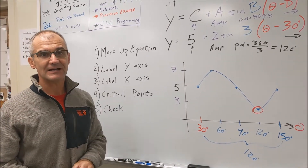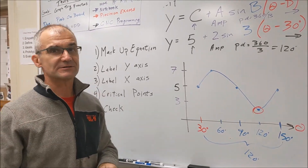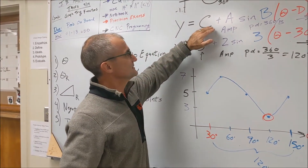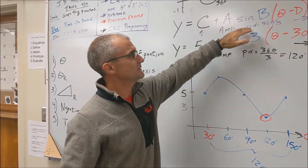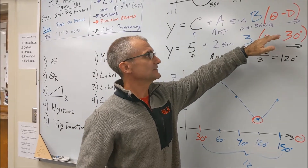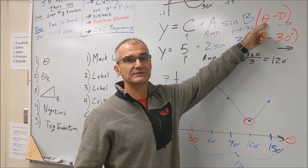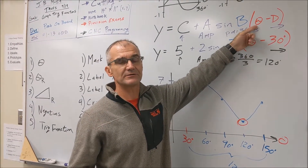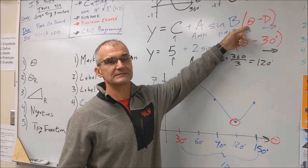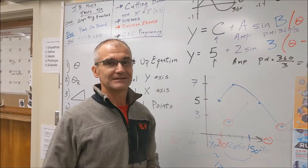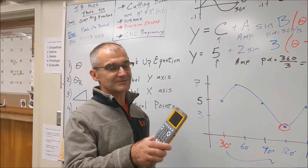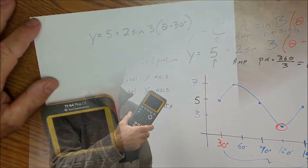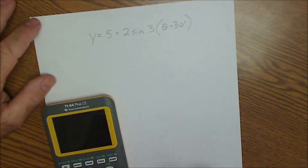That's how you graph in degree measure with all four variables: C, A, B, and D. The fifth variable is whether you're in theta degree mode or x radian mode. Next, I'll go over graphing on the TI-84 calculator.